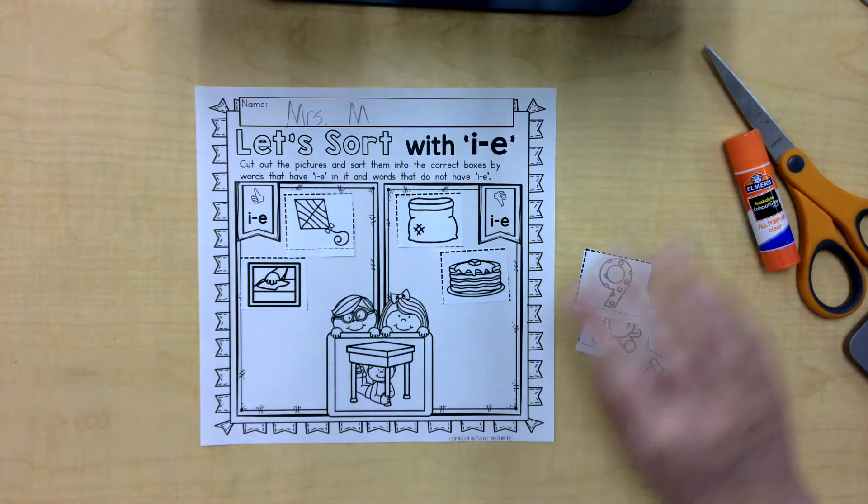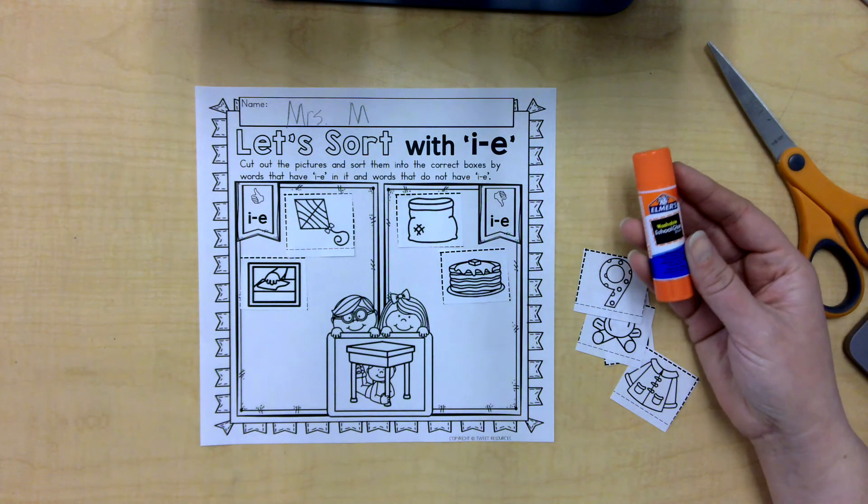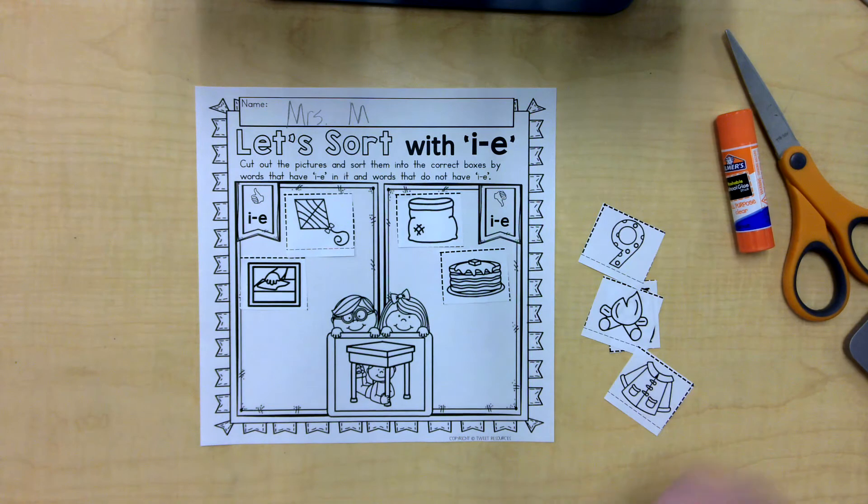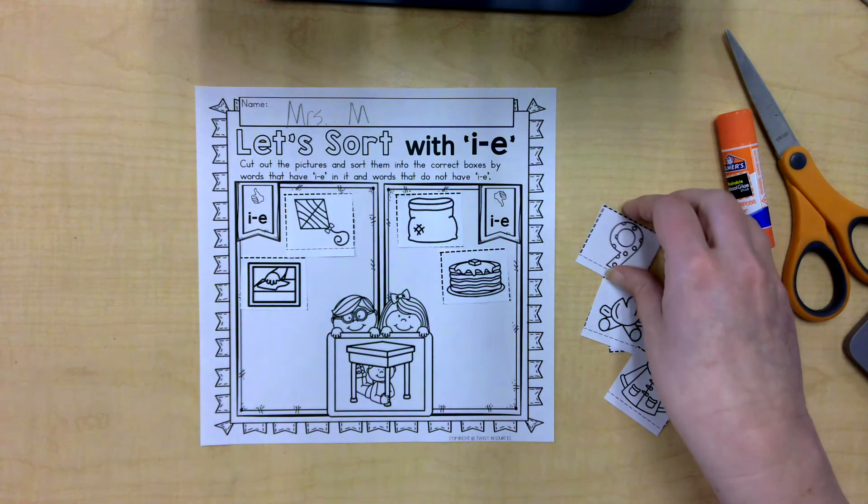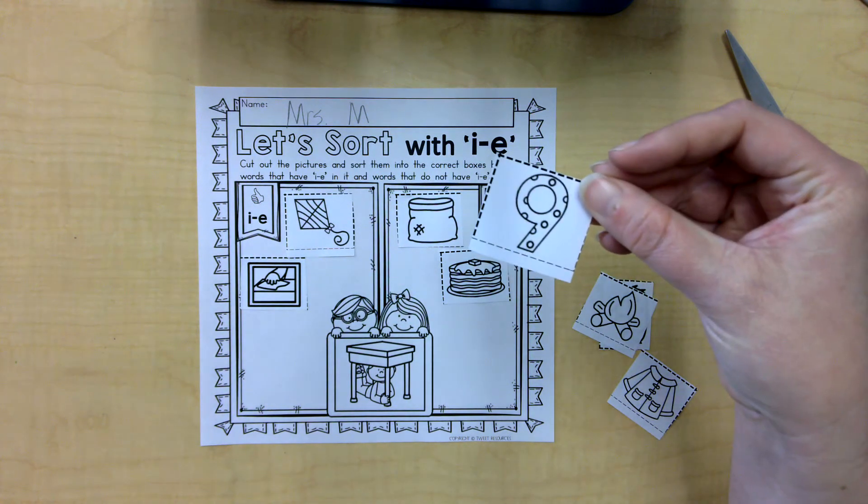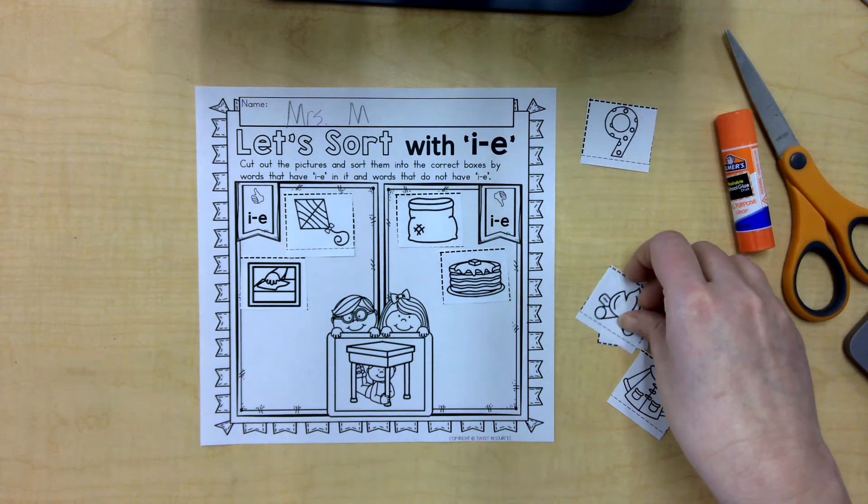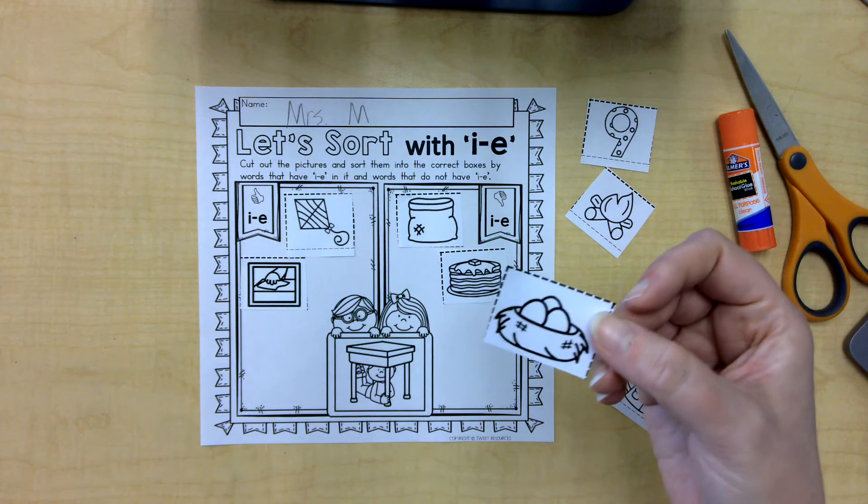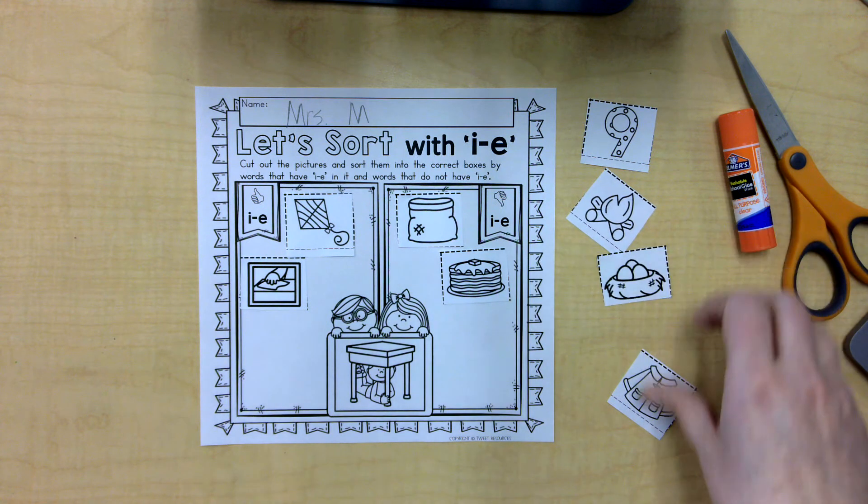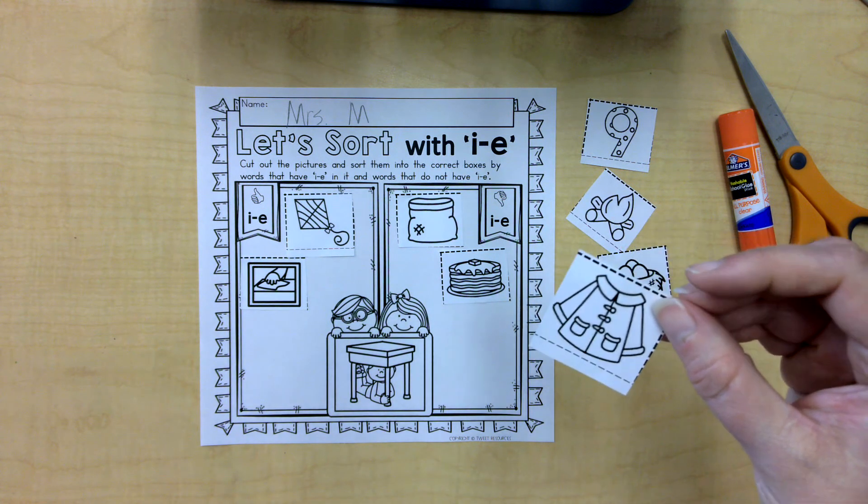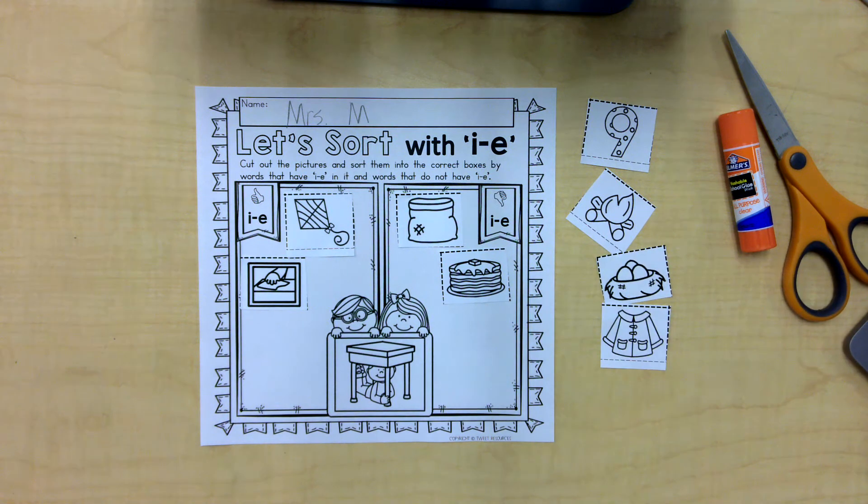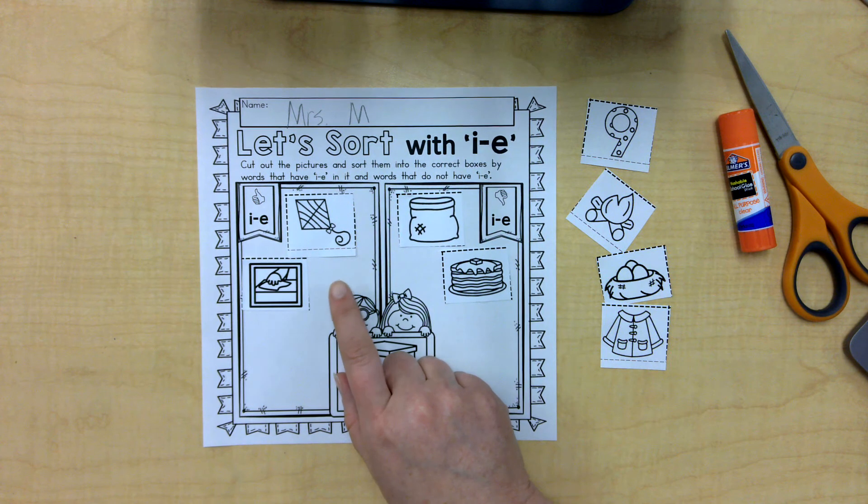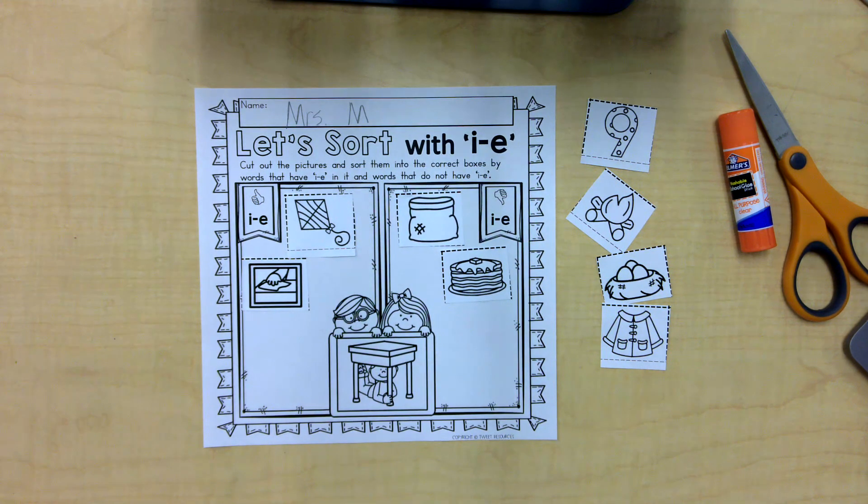And then when you're done, you're going to glue the pictures down. I'm going to tell you what the rest of the pictures are so that you're not confused. This one is a nine. This one is fire. This is a nest. And this is a coat. Alright, listen for those superhero I's. I sang their name inside of the word. Alright my friends, bye!